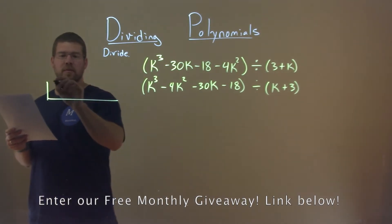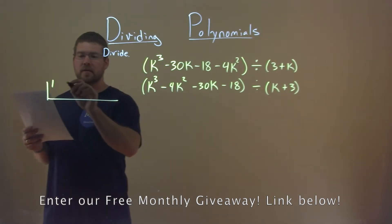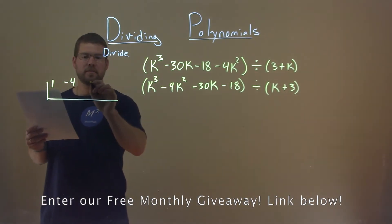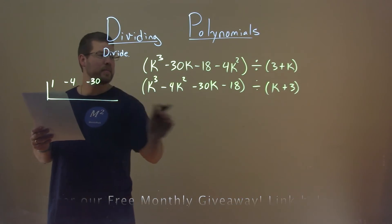Look at the coefficients. In front of k to the third is a 1, in front of the k squared is a negative 4, negative 30 in front of the k value, and then negative 18.